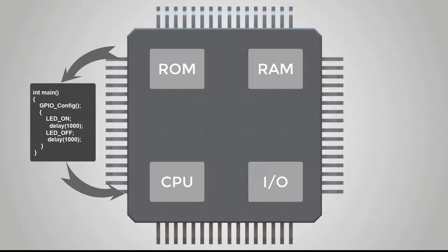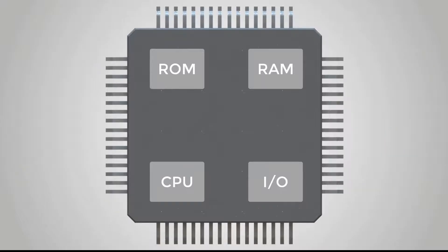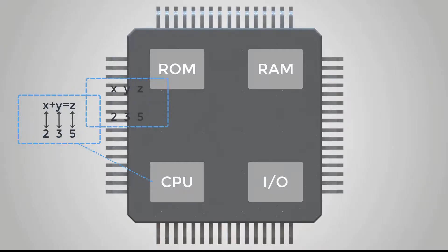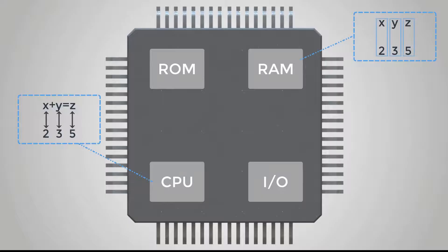For example, the CPU can follow the instructions of the program and output a high level through the I/O interface to light up the external light emitting diode. If the instruction is an arithmetic instruction, the CPU executes the calculation. If a variable is generated during the calculation process, it will be stored in the random access memory RAM, because there is no place for storing variables inside the CPU.